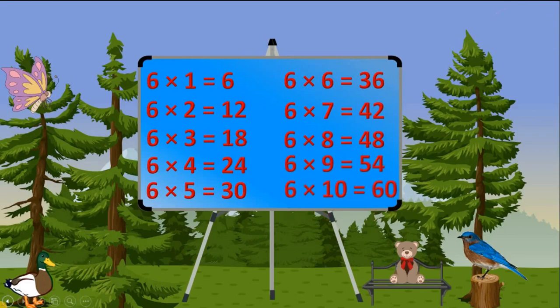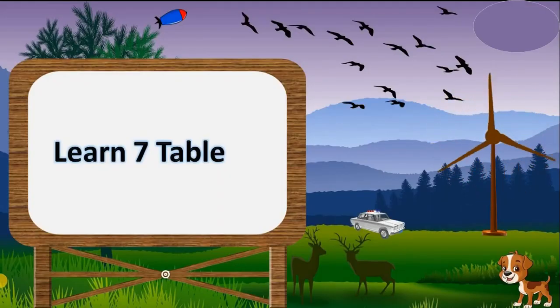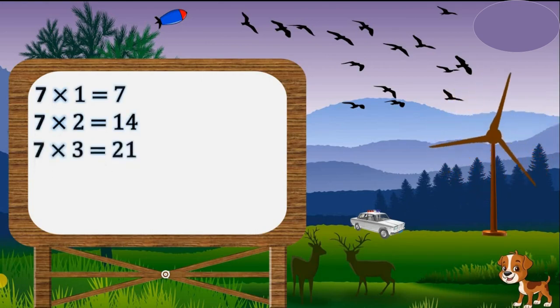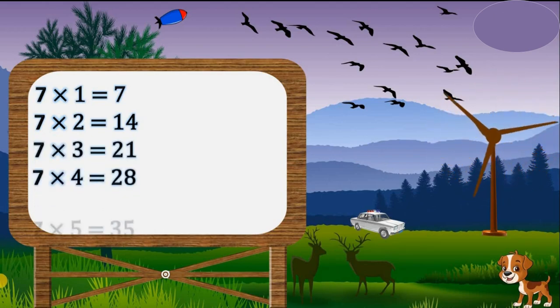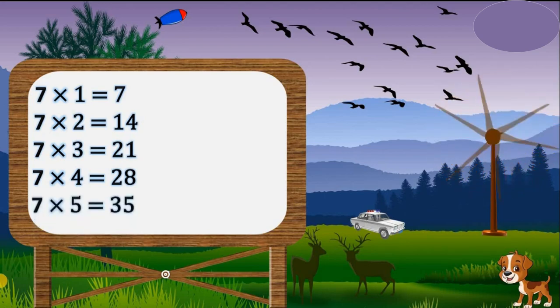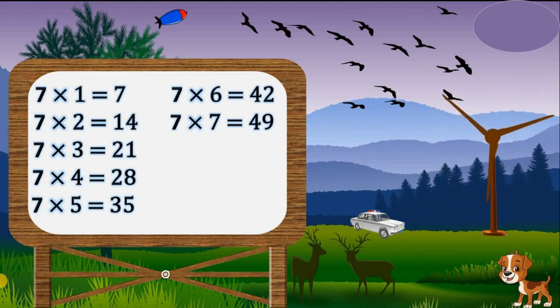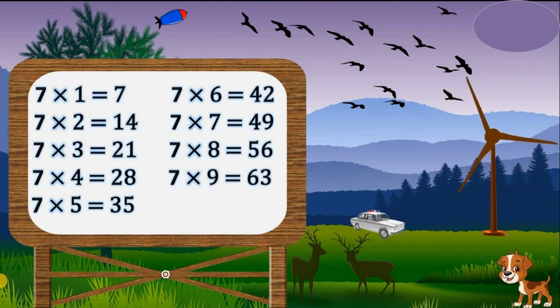6 times 10 equals 60. Learn 7 table. 7 times 1 equals 7. 7 times 2 equals 14. 7 times 3 equals 21. 7 times 4 equals 28. 7 times 5 equals 35. 7 times 6 equals 42. 7 times 7 equals 49. 7 times 8 equals 56. 7 times 9 equals 63. 7 times 10 equals 70.